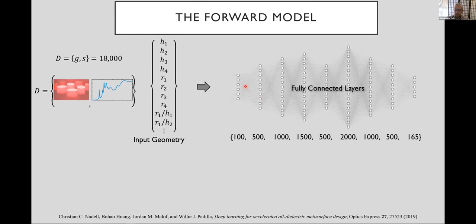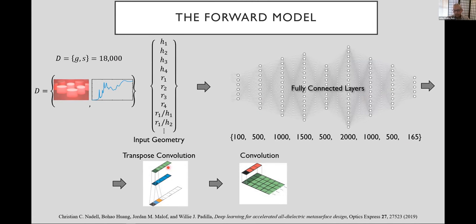We input our geometry into a set of fully connected layers. Their widths are shown here if you have interest. We additionally, at the output of there, used a transpose convolution and a convolution to smooth the output transmission, and this shows some results. So this is the model that we used.